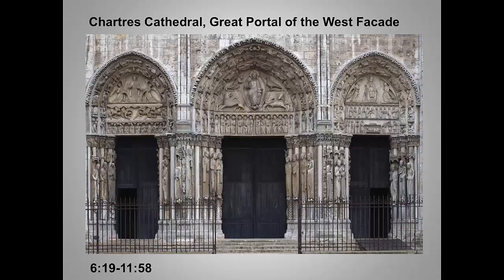The west, or royal portal — another required image — predated the Great Fire, so while it's considered early Gothic, this portal is in some ways a transitional work between Gothic and Romanesque. The sculptural program of the three doors is closely integrated; there is a very deliberate theme to these three doors. The tympana, the lintels — that's the rectangular space below the tympanum — and the archivolts — those are the carved arches above the tympanum, basically the same as voussoirs — together emphasize major events in Christ's life, his mission, and his divine plan.